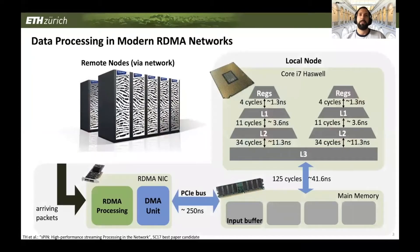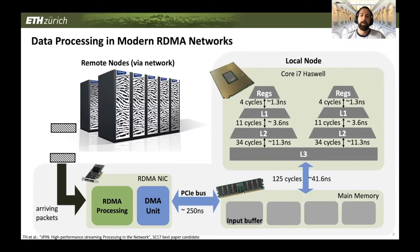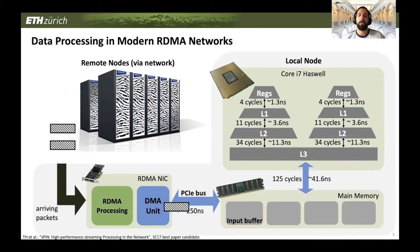Let's start off by defining what we actually mean by RDMA networks. RDMA stands for Remote Direct Memory Access. Here on the slide, we see a high-performance system. On the right, we see a node complex of this system, and it receives packets. Those packets go through the RDMA network card, are processed there, placed in domain memory using DMA, and eventually consumed and processed by the CPU.